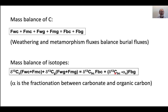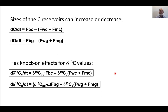The sizes of the reservoirs can increase or decrease. If you look at the carbonate reservoir, whatever gets buried minus whatever is put back into the atmosphere and oceans will increase the carbonate. If the flux of buried carbon is greater than the flux of weathered carbon plus organic and volcanic carbon, then the organic carbon reservoir is going to increase. That's the constraint that if the fluxes don't balance, then these reservoirs can change in size.